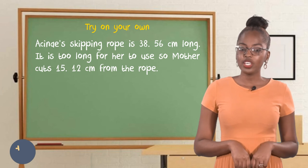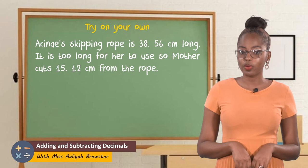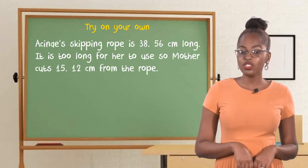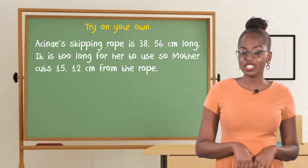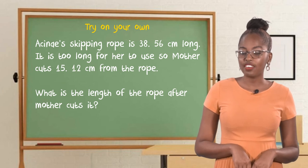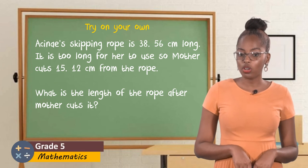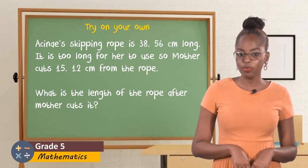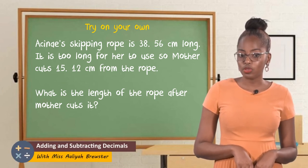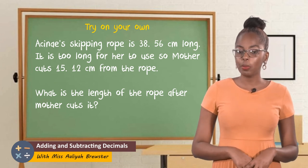You can try this activity on your own. ACN's skipping rope is 38 and 56-hundredths cm long. It is too long for her to use, so mother cuts 15 and 12-hundredths cm from the rope. What is the length of the rope after mother cuts it? Remember: write down the numbers one under the other with the decimal points lined up. Put in zeros so the numbers have the same length. Then subtract each column individually, and remember to include a decimal point in your answer.